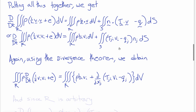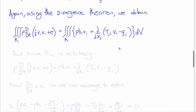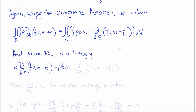Since the region R is arbitrary and the equations must hold for any and all regions R, the integrands themselves must be satisfied. Therefore: rho times the material derivative of (one-half V_i V_i plus E) equals rho B_i V_i plus ∂/∂x_j (T_{ji} V_i minus Q_j).